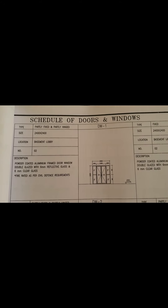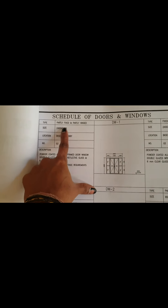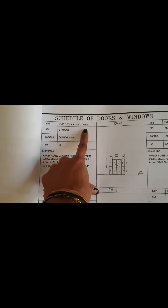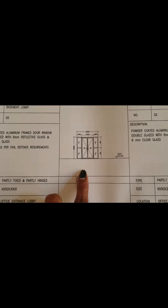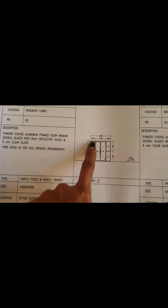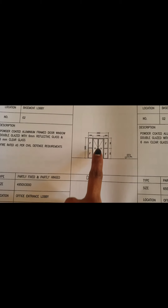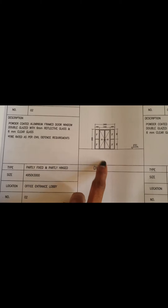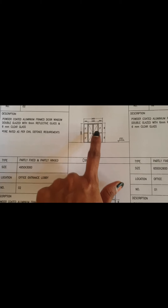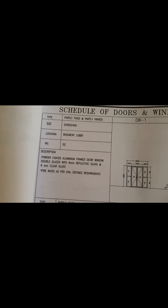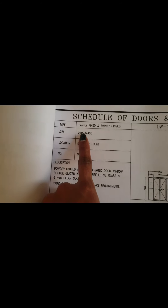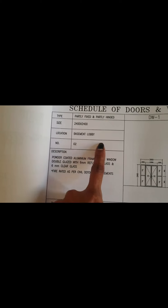First I will show you how to take quantities from the schedule of drawings. This is the first sheet of the schedule of drawings. Here it shows DW1 — partly fixed and partly hinged. From this drawing you can see the F portion is fixed and the H portion is hinged. The symbol for openings indicates a hinged door — that's why the hinged door is coming in that one.